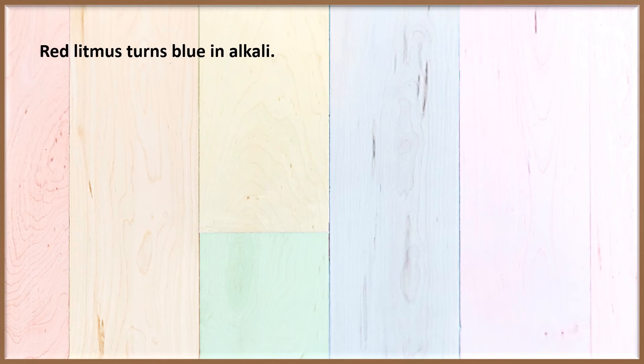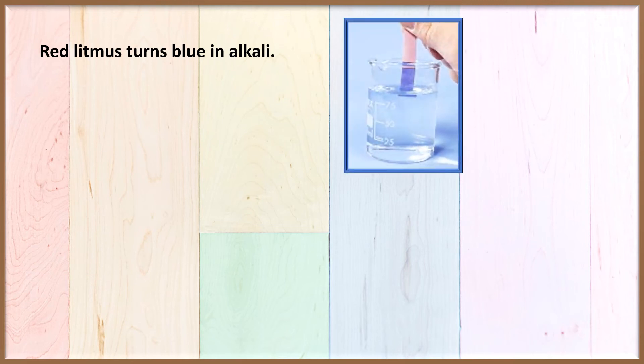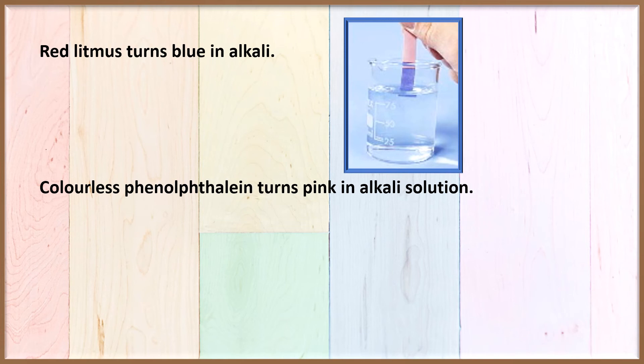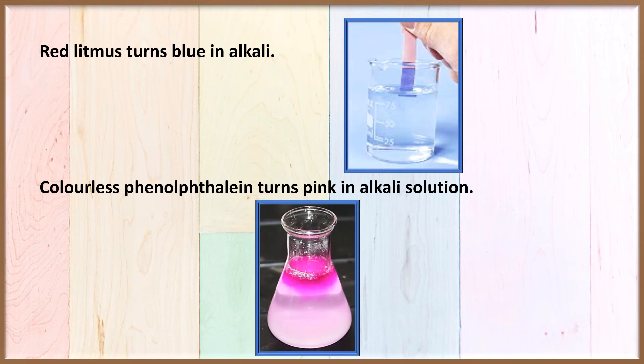Red litmus turns blue in an alkali — exactly opposite of an acid. In an acid, blue litmus turns red, but in a base, red litmus turns blue. Phenolphthalein is another indicator. It is colourless, but when it is put in an alkali or a base, phenolphthalein turns pink. These two indicators tell us that the solution is a base or alkaline.